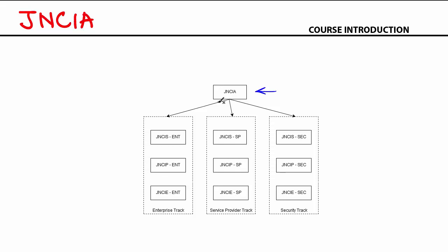After JNCIA, you then move into JNCIS, which stands for Juniper Networks Certified Internet Specialist. When you move into JNCIS, you have to make an important decision — you have to choose your track. You have three options: you can choose the enterprise track, the service provider track, or security.